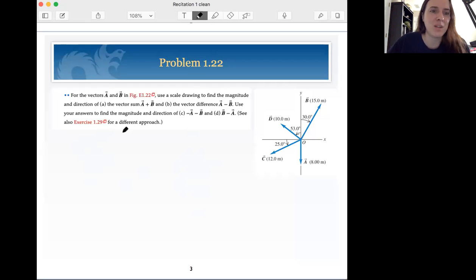For the vectors a and b in figure E 1.22, which is this one right here, use a scale drawing to find the magnitude and direction of a, the vector sum a plus b, b, the vector difference a minus b. Use your answers to find the magnitude and direction of negative a minus b and b minus a.